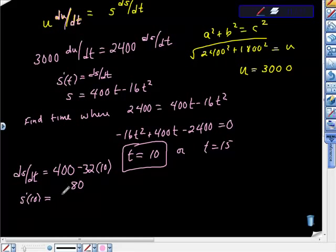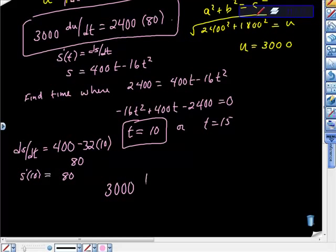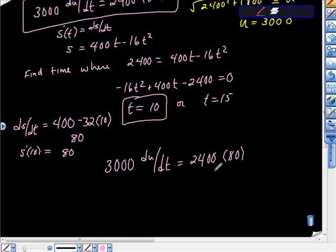Now we have ds/dt at that specific time where the rocket is at that height, and we just put this in. We have 3000 du/dt equals 2400 times 80. We want du/dt, so we divide both sides by 3000, and it turns out that du/dt, the rate of distance change at that time, is 64.